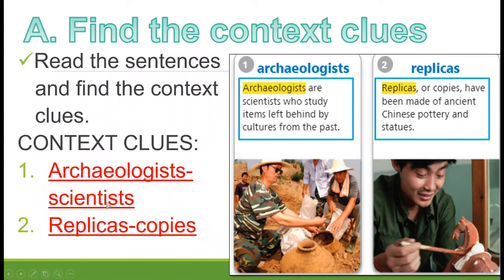So you can see the context clues: for 'archaeologists,' they are scientists studying cultures of the past. For 'replicas,' the word 'or' signals the definition — copies. When you see the word 'or,' it is often giving you another word for the vocabulary term. For your activity at home, find the context clues for numbers three through ten, since we finished one and two.